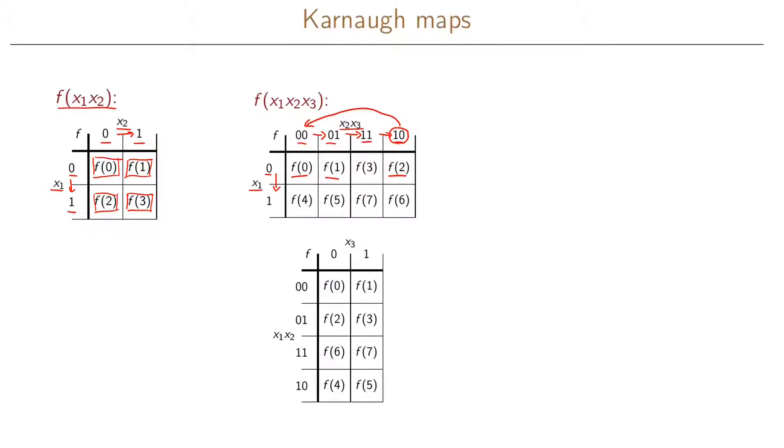So zero, one, zero, if we count it as x1, x2, x3. So this will be f of two. And then f of three will be written here instead. And then similarly for the last row, we have f of four, f of five, then f of six in the last column and f of seven in the second last column instead.